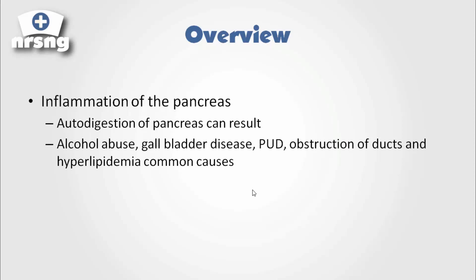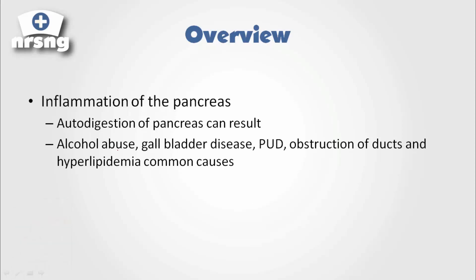Common causes for pancreatitis are alcohol abuse, gallbladder disease, peptic ulcer disease, obstruction of the ducts, and hyperlipidemia. Gallstones and alcohol abuse are two of the most common causes of this disease. Alcohol abuse can lead to chronic pancreatitis, which can develop over time and actually lead to complete loss of pancreatic function.